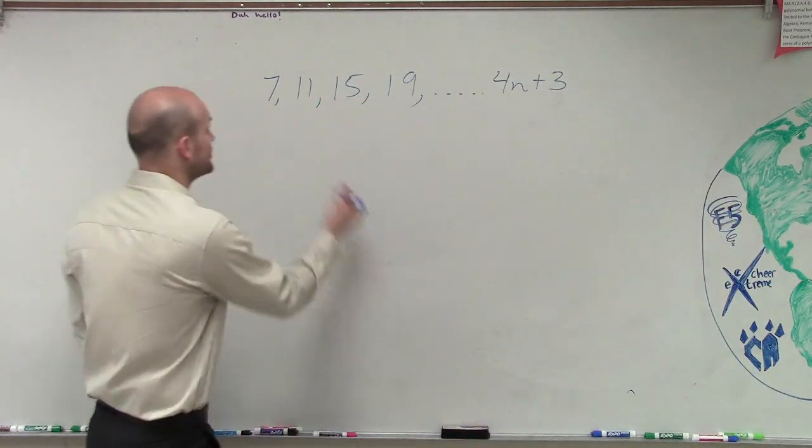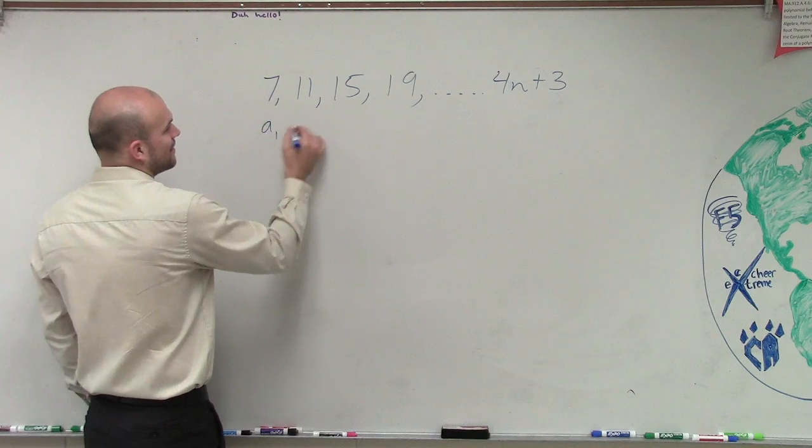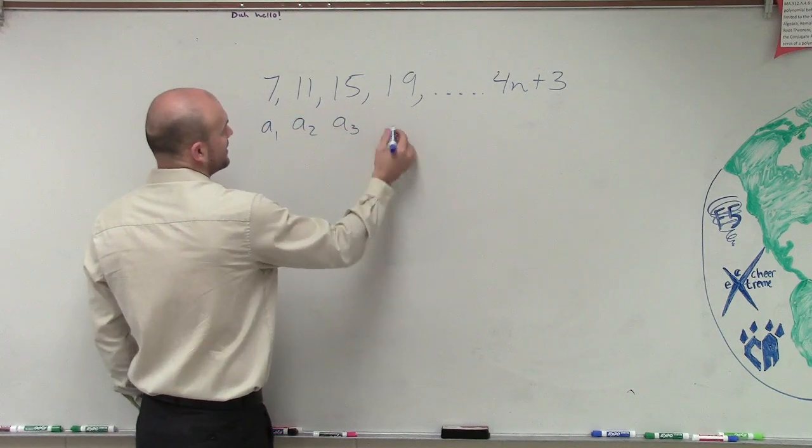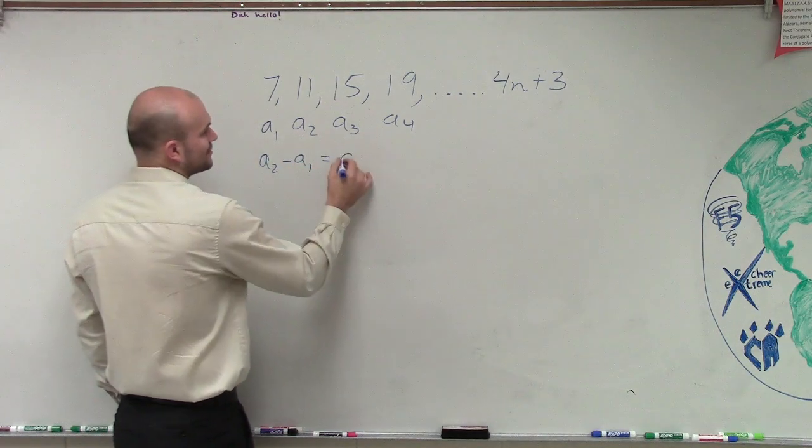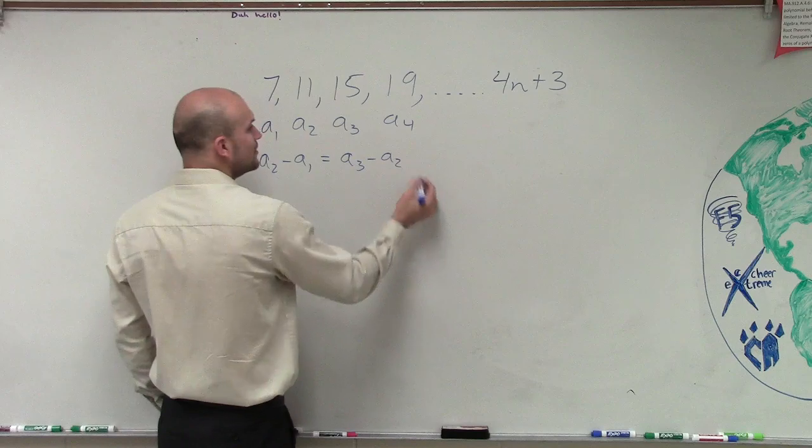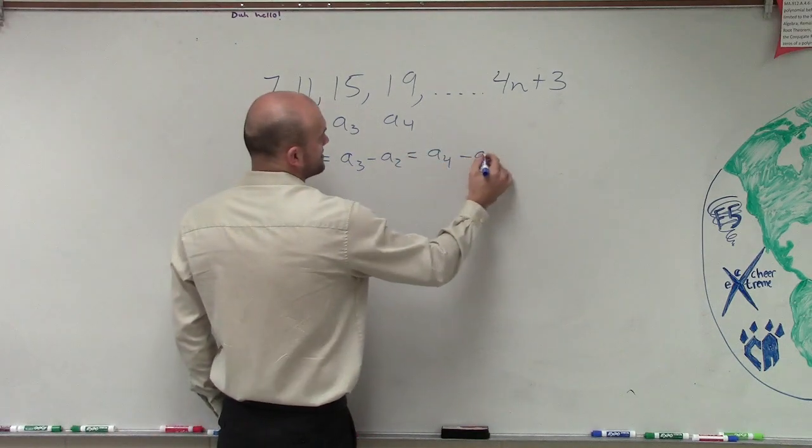So all we're going to do is take, we have a1, a2, a3, a4. We're just going to say, all right, if a2 minus a1 is equal to a3 minus a2 is equal to a4 minus a3.